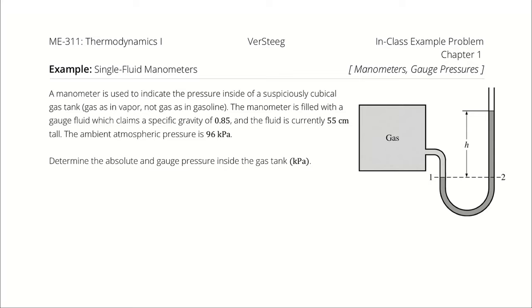A manometer is used to indicate the pressure inside of a suspiciously cubical gas tank. Note that's gas as in vapor, not gas as in gasoline. The manometer is filled with a gauge fluid which claims a specific gravity of 0.85, and the fluid is currently 55 centimeters tall. The ambient atmospheric pressure is 96 kilopascals. Determine the absolute and gauge pressure inside the gas tank.